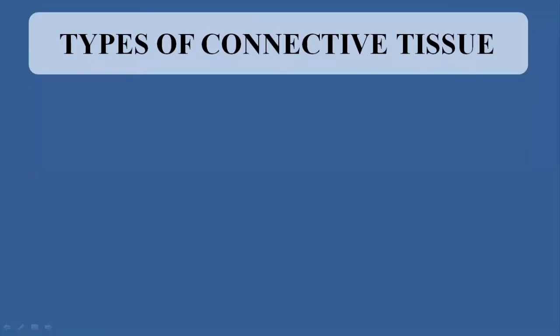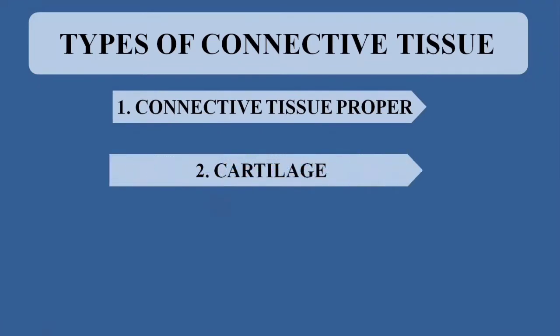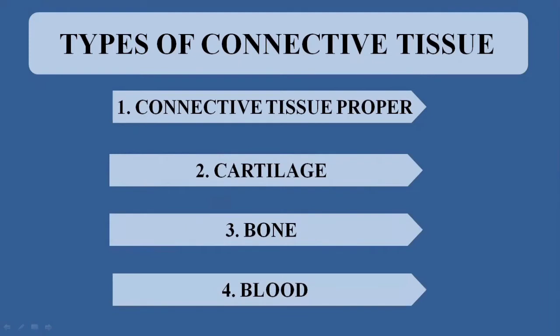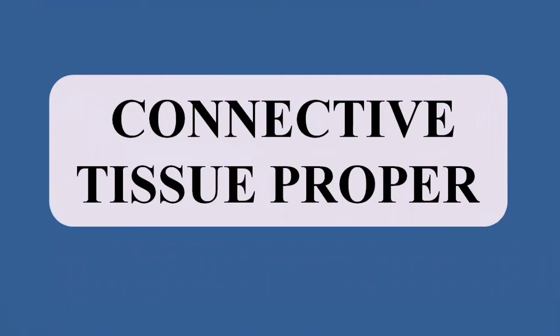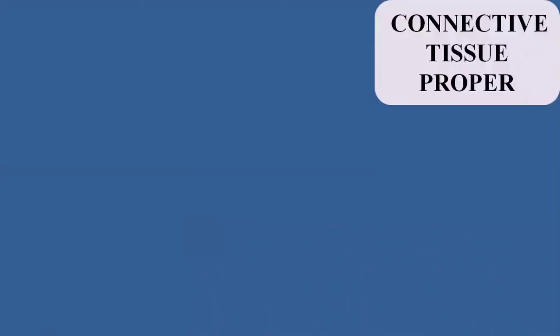The four different types of connective tissue are: connective tissue proper, cartilage, bone, and blood. Connective tissue proper is composed of fibers, cells, and matrix — these three things are important for connective tissue proper. It is divided into further types depending on the concentration and composition of the fibers and the matrix.